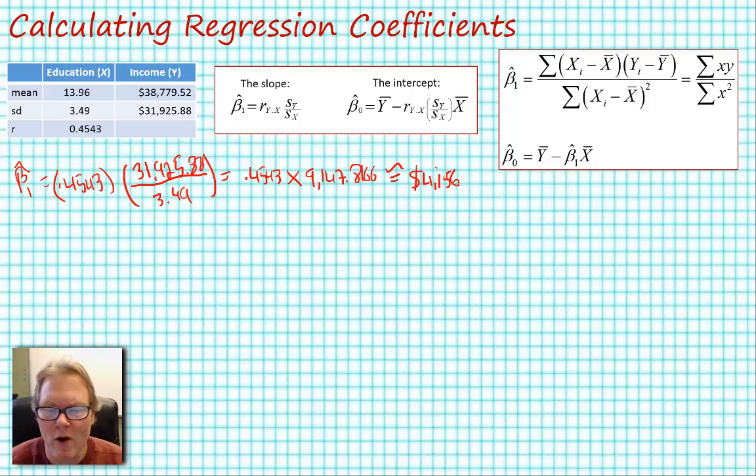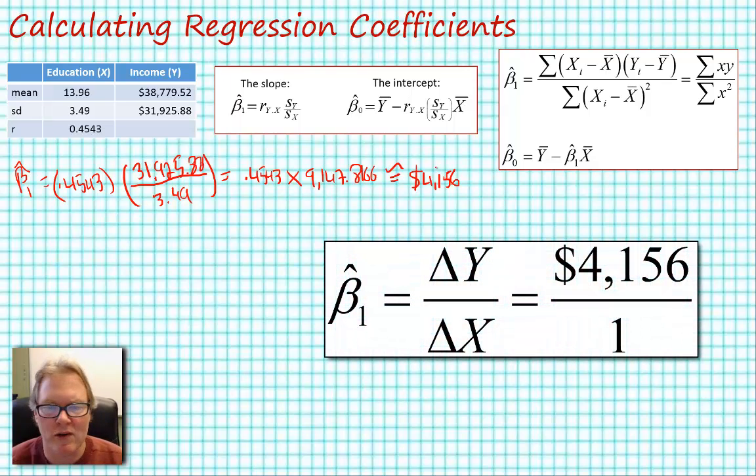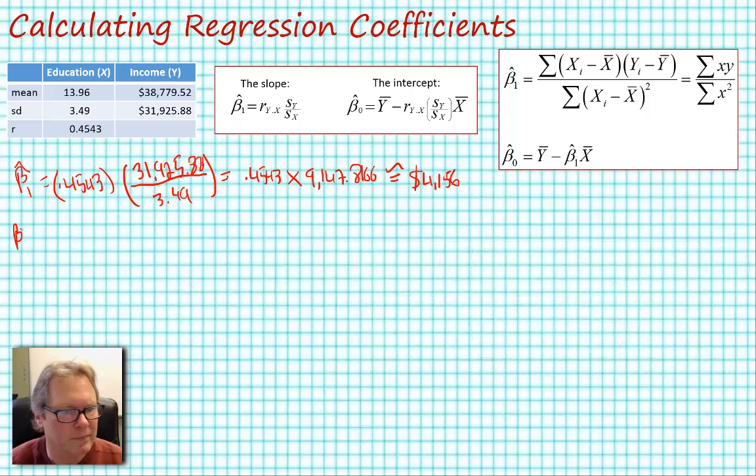So our beta hat sub 1 coefficient, the interpretation is that when we see an increase in education of one year or one unit, we see an expected or average increase in income of approximately $4,156. Let's go ahead and calculate our slope coefficient beta hat sub 0. Once we've solved for beta hat sub 1, we can use that information.